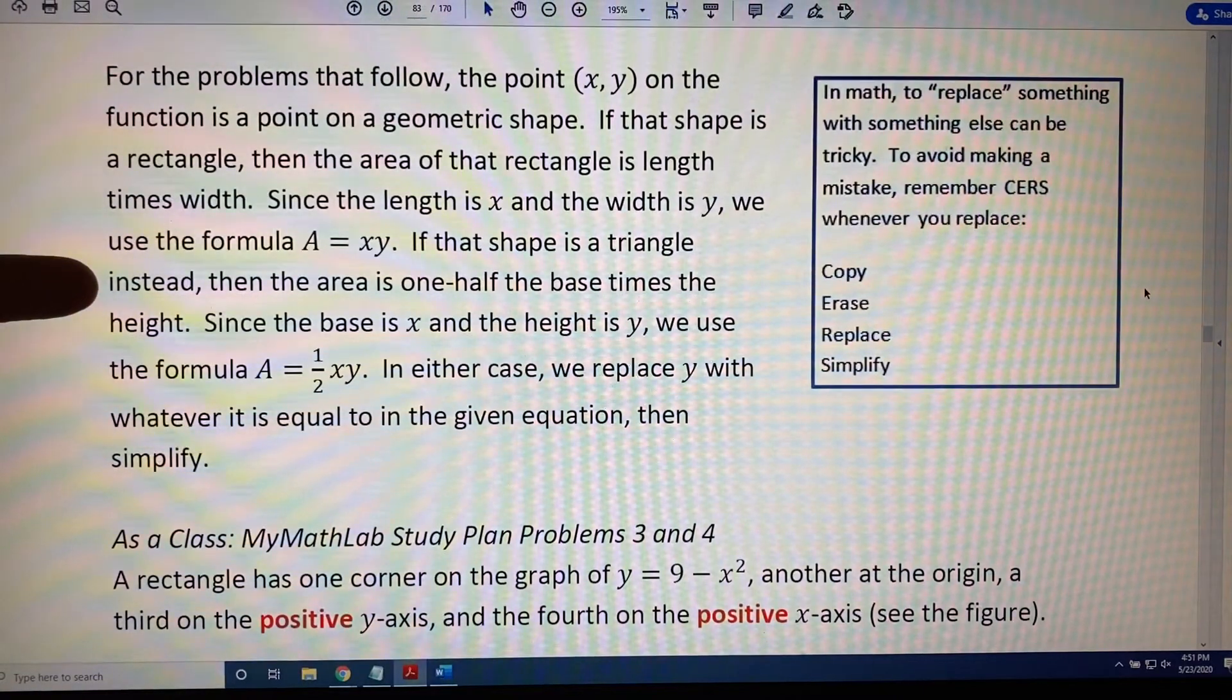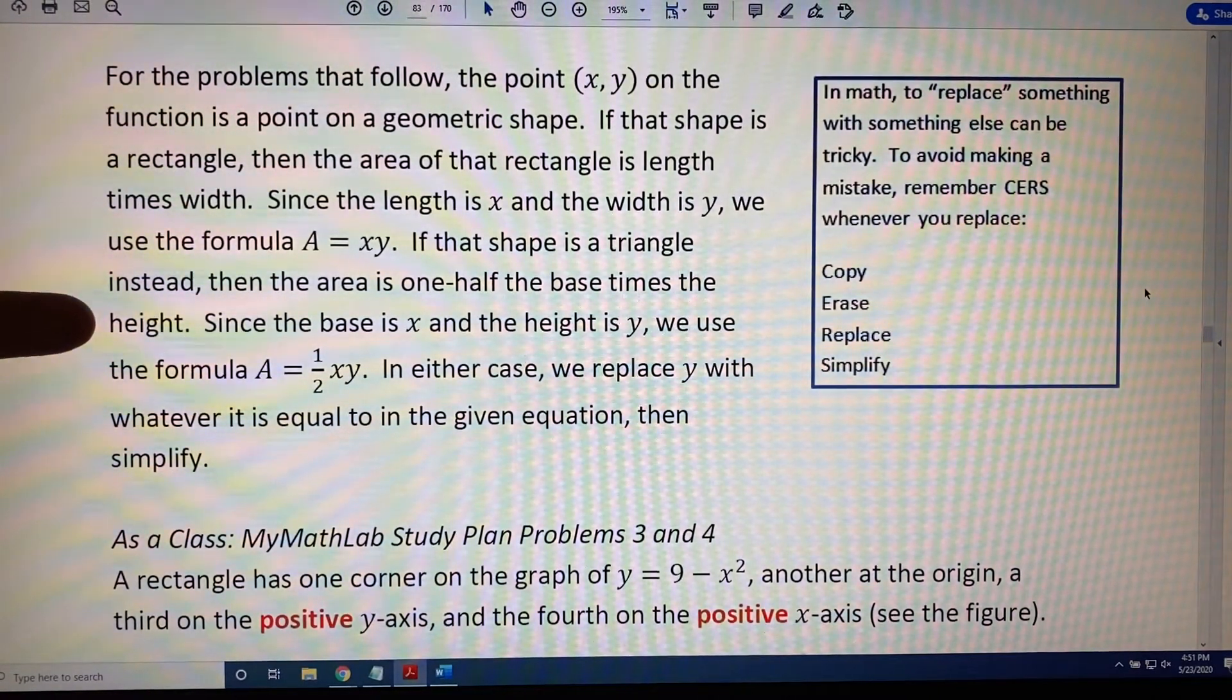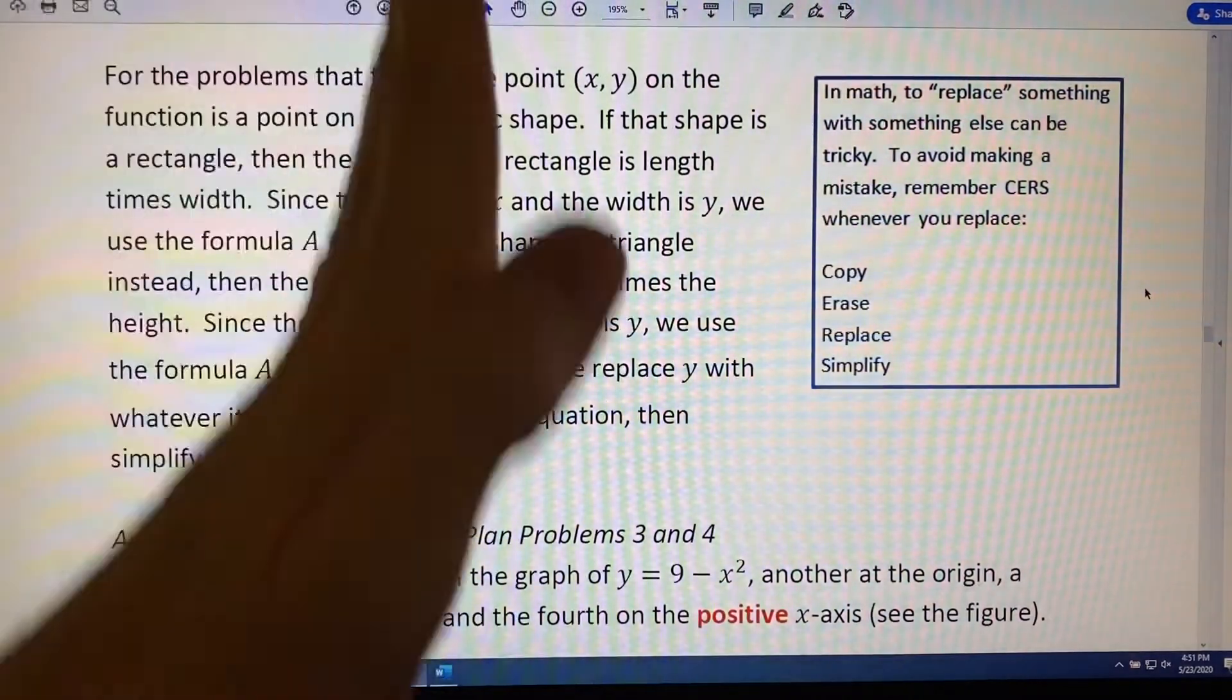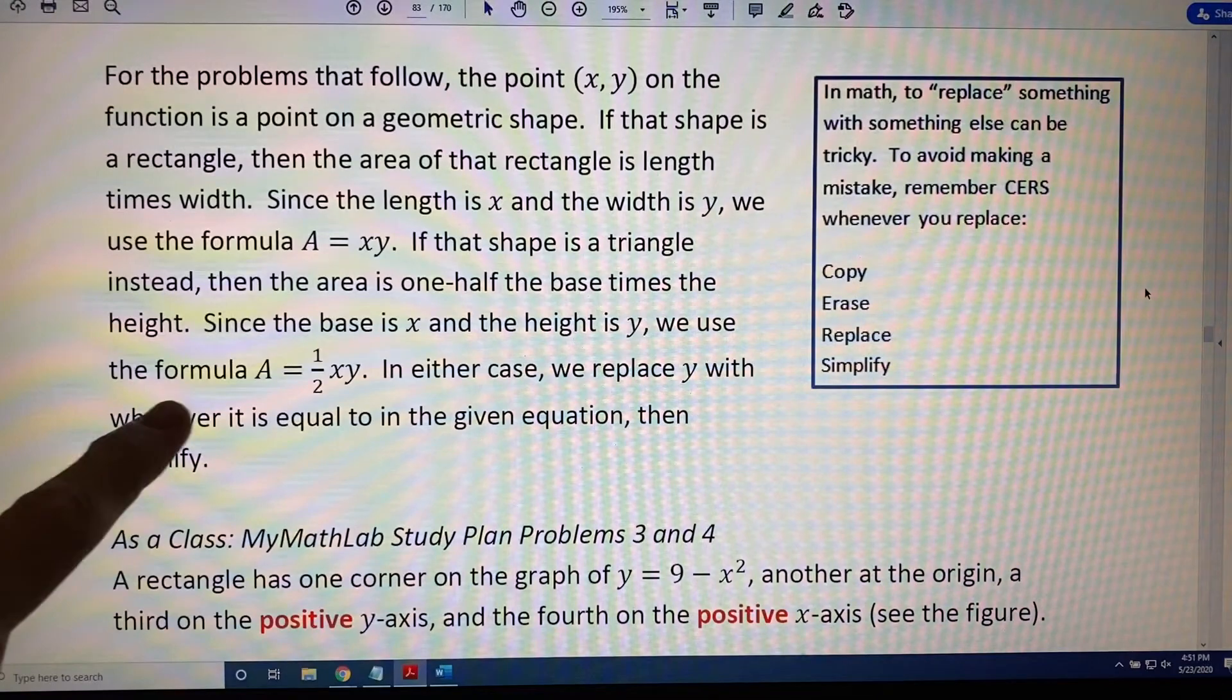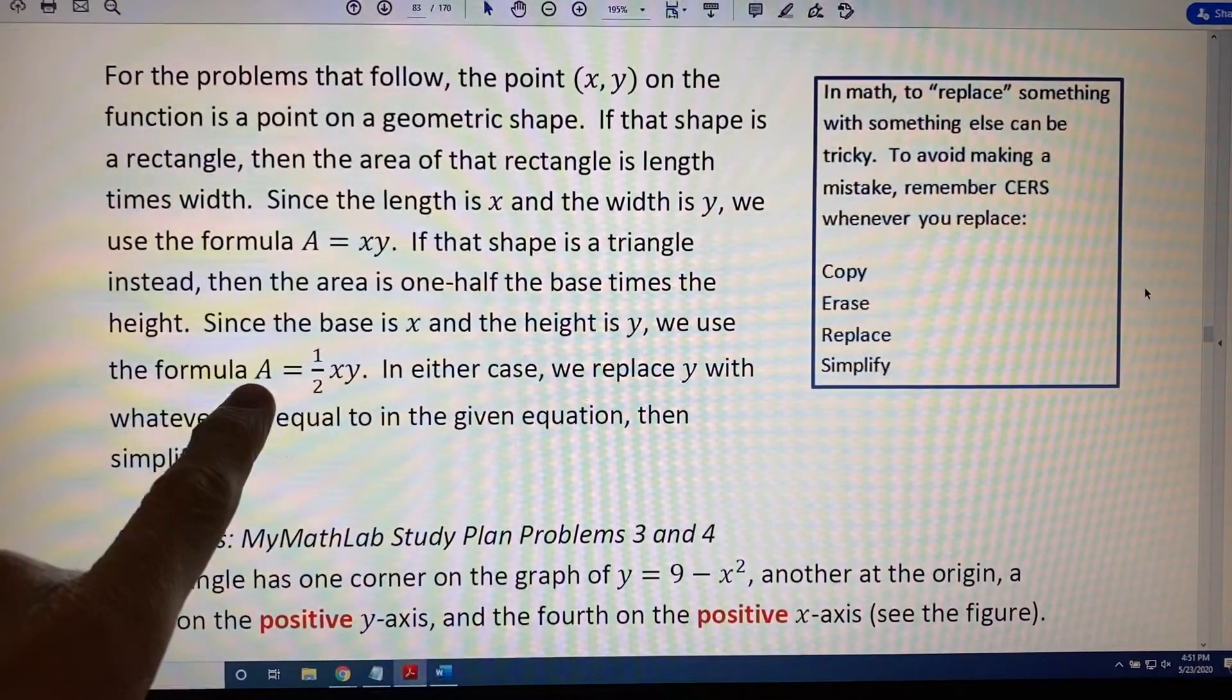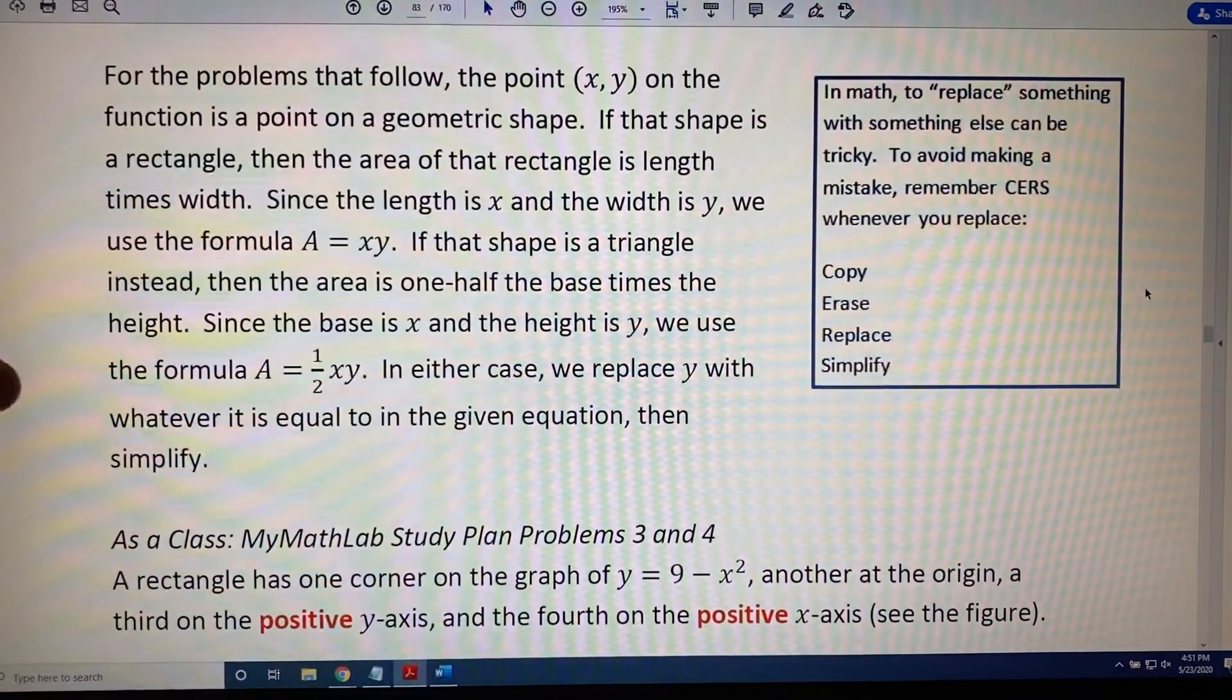But if that shape is a triangle instead, then the area of a triangle is one half the base times the height. Again, the base is x, the height is y. So we're going to use the formula area equals half base times height, A equals (1/2)xy.